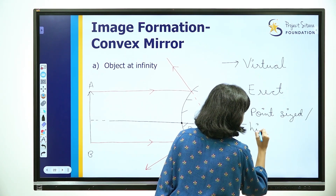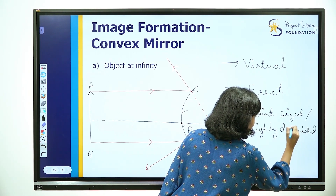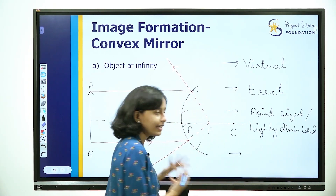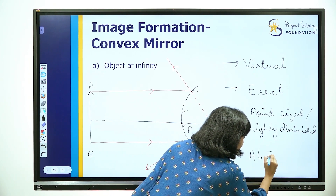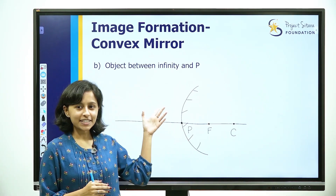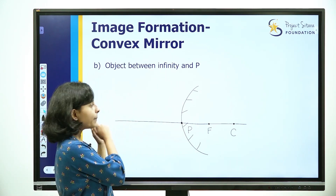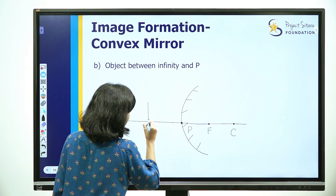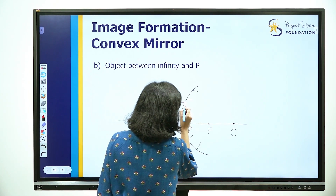The final property: the image is highly diminished, point-sized. You know where the image is being formed — it is formed at the principal focus F. So this is the first situation with the object at infinity. Now the second situation: for a convex mirror, the object is between infinity and P.